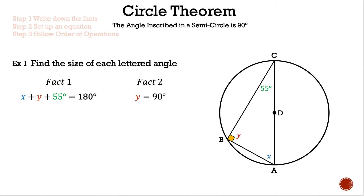Fact two: y = 90 degrees, because the longest side is the diameter, making it the hypotenuse, so angle ABC = 90°. That is our first answer.